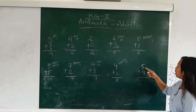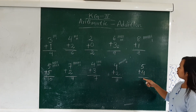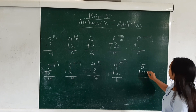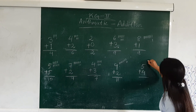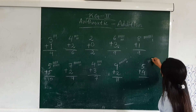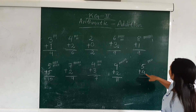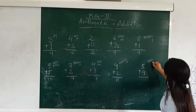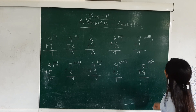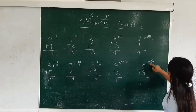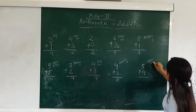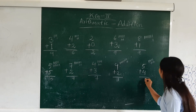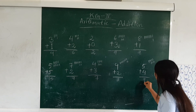Here we have 5 plus 4. What will be the result? We will find out now. We will merge 5 times: 1, 2, 3, 4, 5. Here we have 4: 1, 2, 3, 4. Now we will count together: 1, 2, 3, 4, 5, 6, 7, 8, 9. So here we found 9. The result is 9.